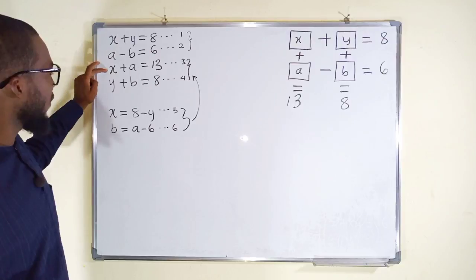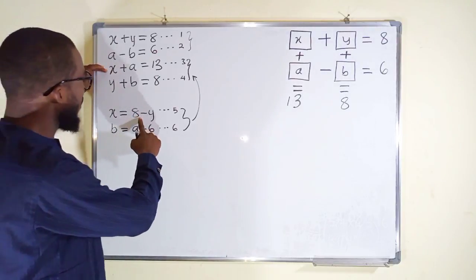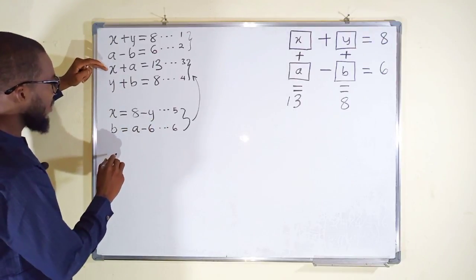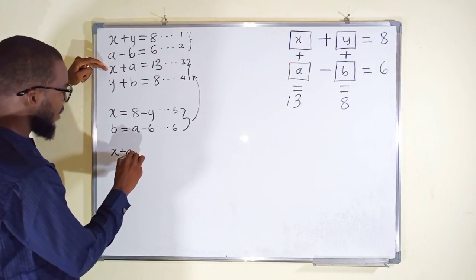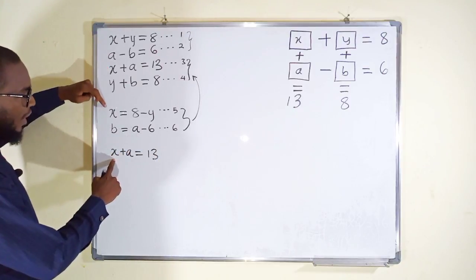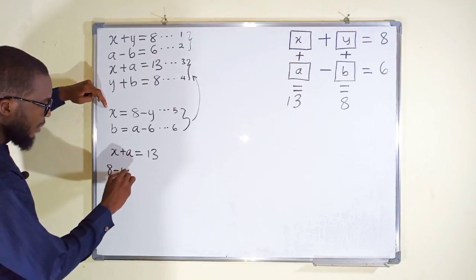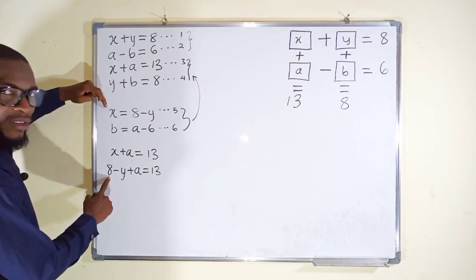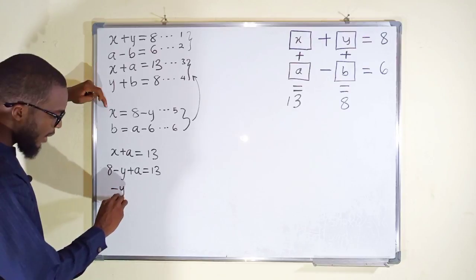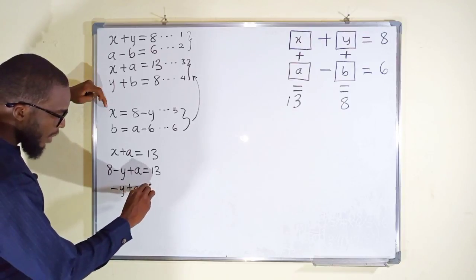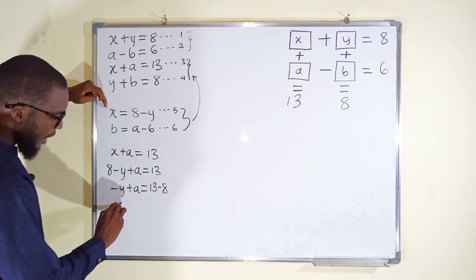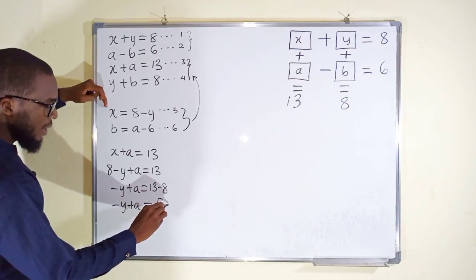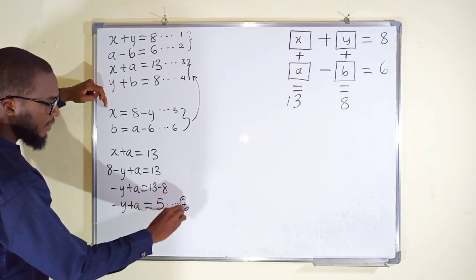In equation 3 we have x, so wherever we see x we replace it with 8 minus y. So instead of x plus a equals 13, we write 8 minus y plus a equals 13. Simplifying, negative y plus a equals 13 minus 8, which gives us negative y plus a equals 5. I'll call this equation 7.